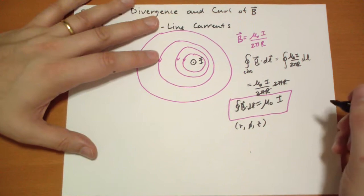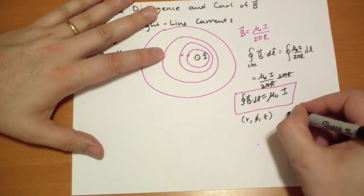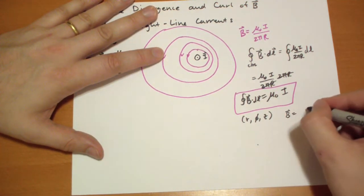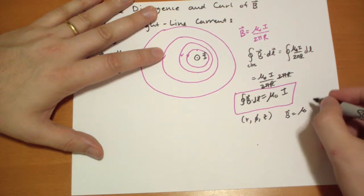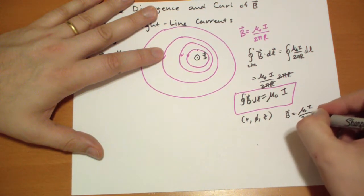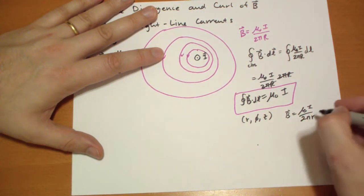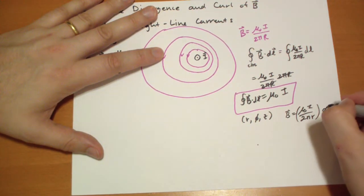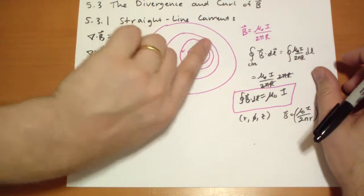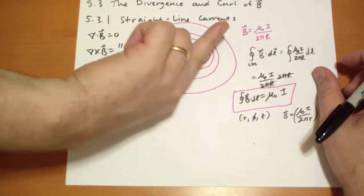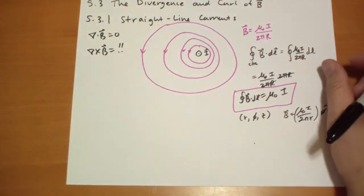So now, we can take any path. The B vector in cylindrical coordinates is always going to be μ₀I over 2π and whatever R you're at. And the direction it's going to point is in the φ hat direction. It's always going to point wherever, whatever would happen as you increase φ, it's going to point in the same direction.